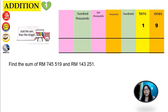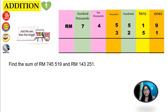Place value of ones will be 9, tens will be 1, hundreds will be 5, thousands will be 5, ten thousands will be 4, hundred thousands will be 7. Then you write the symbol RM. Plus with the next number, starting with place value ones: 1, tens: 5, hundreds: 2, thousands: 3, ten thousands: 4, hundred thousands: 1. Don't forget the symbol RM and the plus sign.